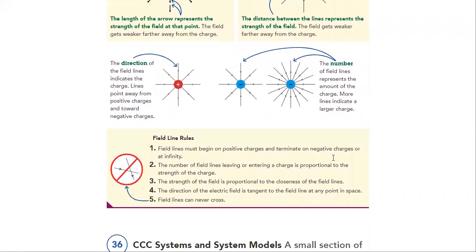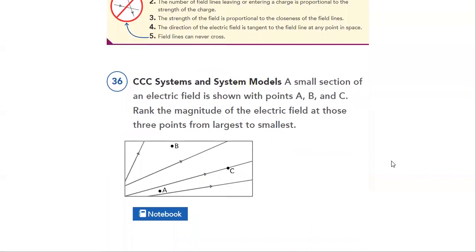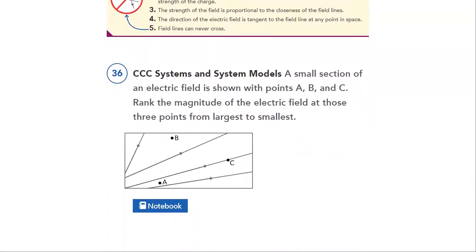And then, we see the field line rules. This is a very important thing to cover. However, field lines must begin on positive charge and terminate on negative charge at infinity. The number of field lines leaving or entering a charge is proportional to the strength of the charge and many other points that we will cover in details in our studies.